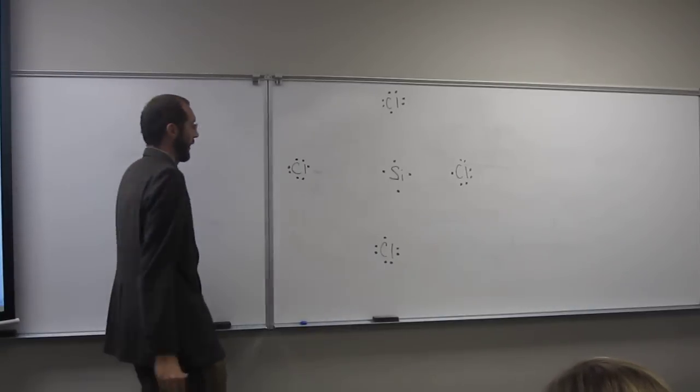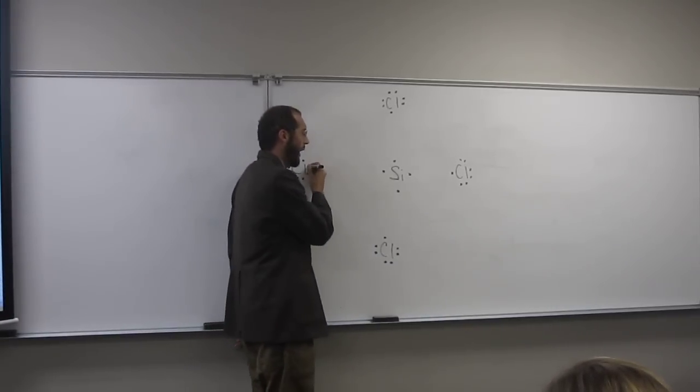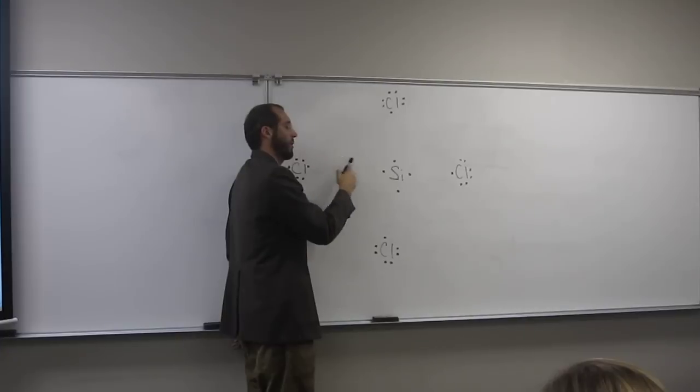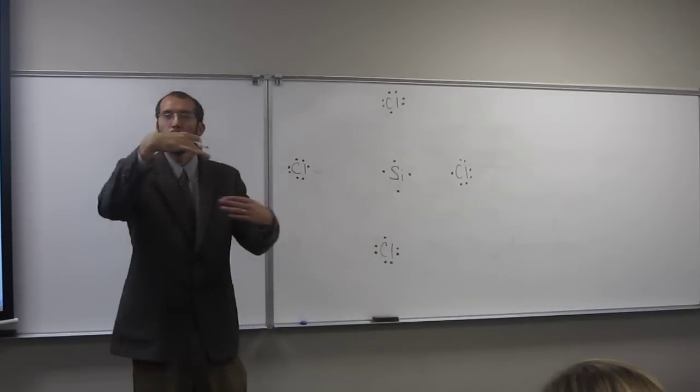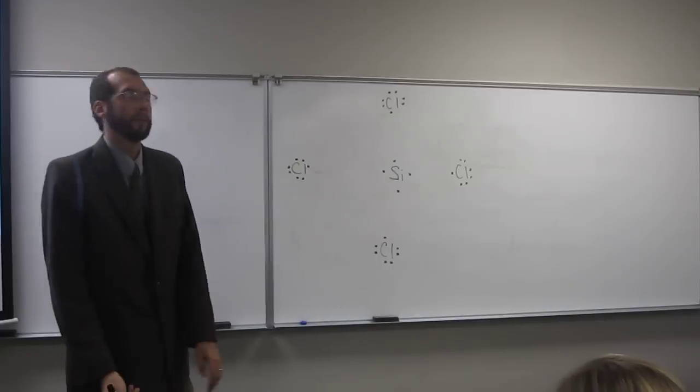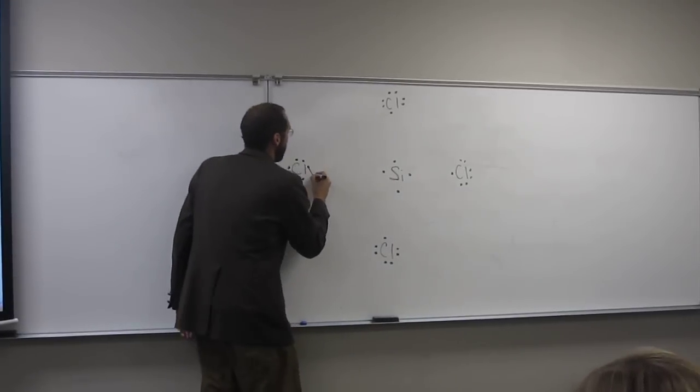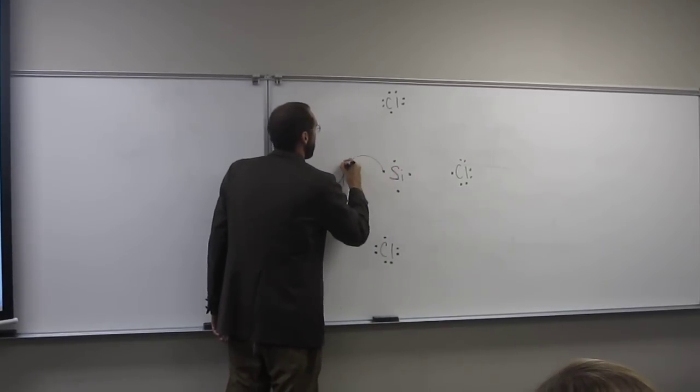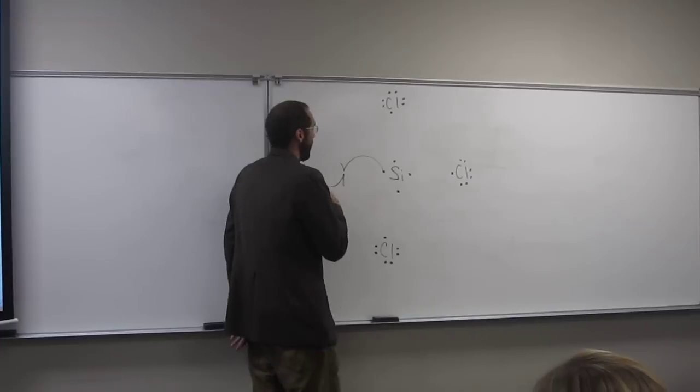So, now we're going to make a covalent compound by attaching these two electrons together. So, we're going to essentially make them get into their own orbital together. It's called a hybridized orbital, and we'll talk about that more later.